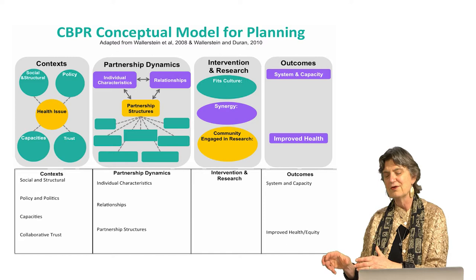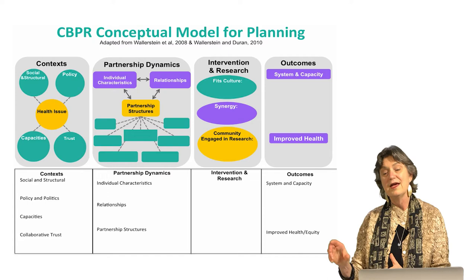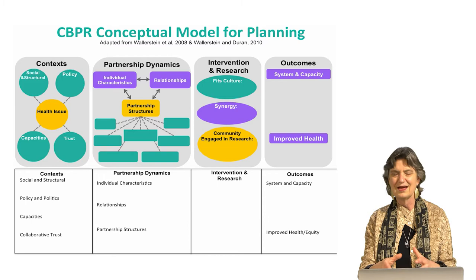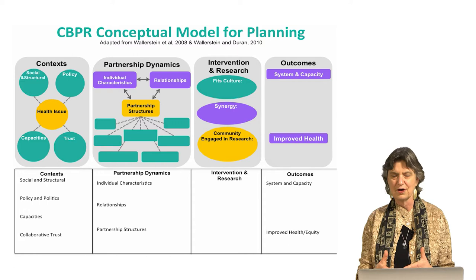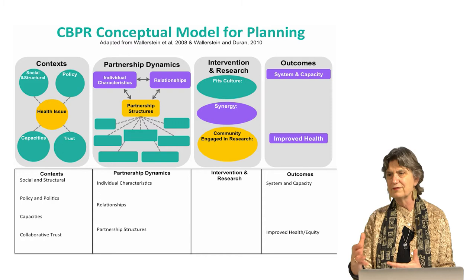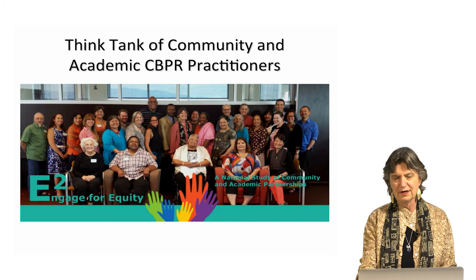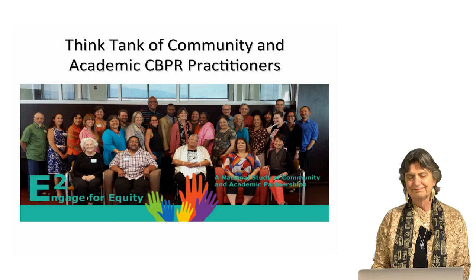If you want an outcome of reduced teen pregnancy, for example, do you have teens in your partnership structure to enable you to work together toward that outcome? They may define the outcome very differently once you start engaging the youth. So that's the model — it shows feedback loops and allows you to use it for your own planning and reflection. You can come back to it a year from now and say: where are you at with what you hoped for, as an opportunity for reflection. I appreciate the involvement of everybody in the Engage for Equity grant and the think tank of practitioners. Thank you.